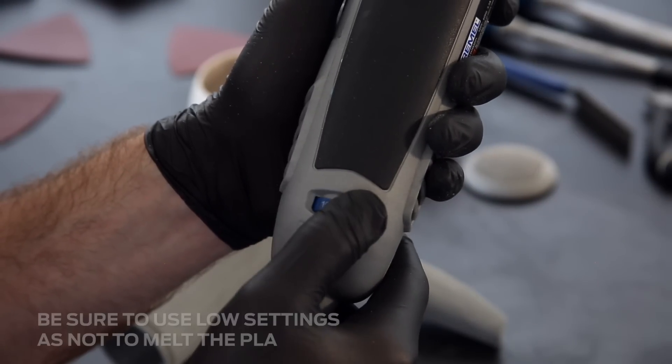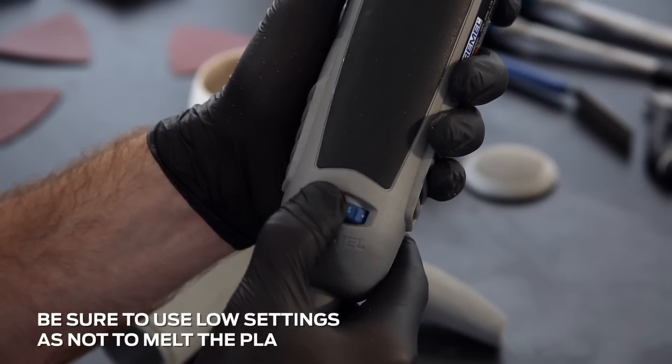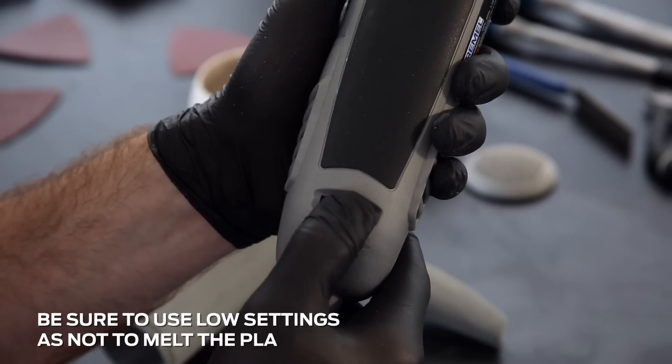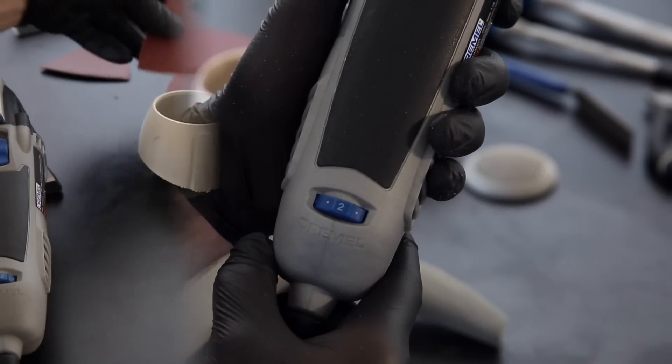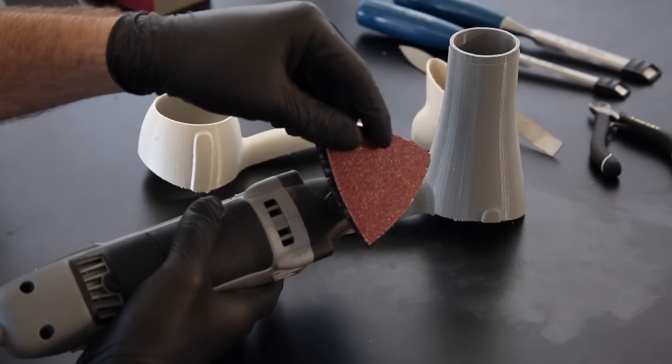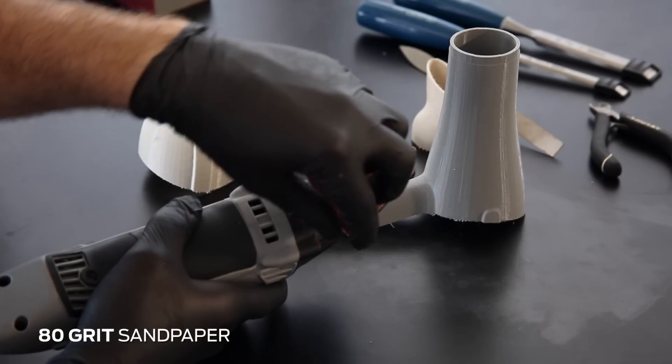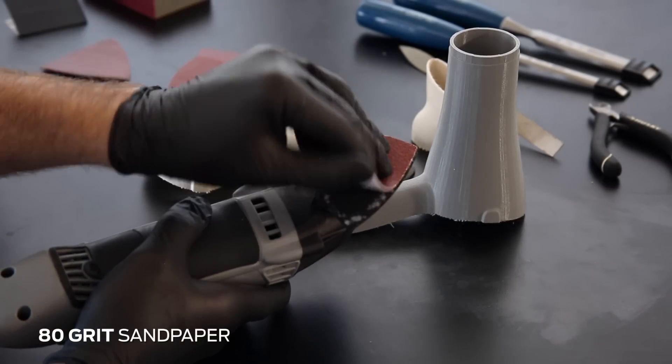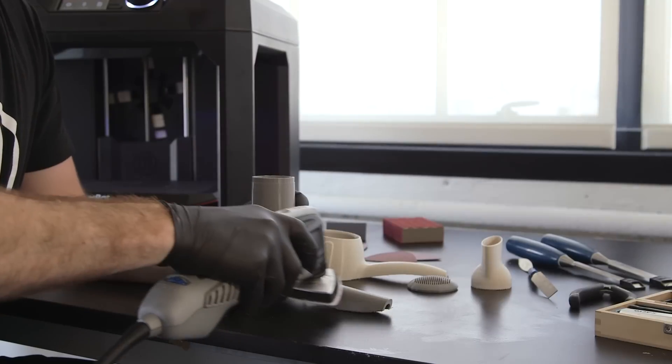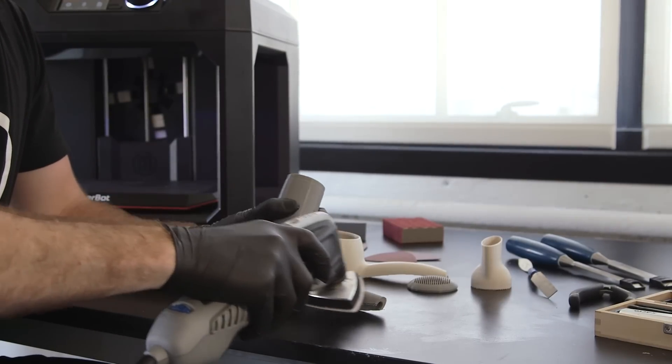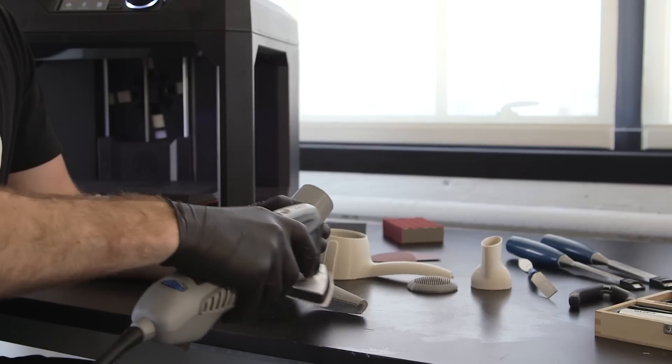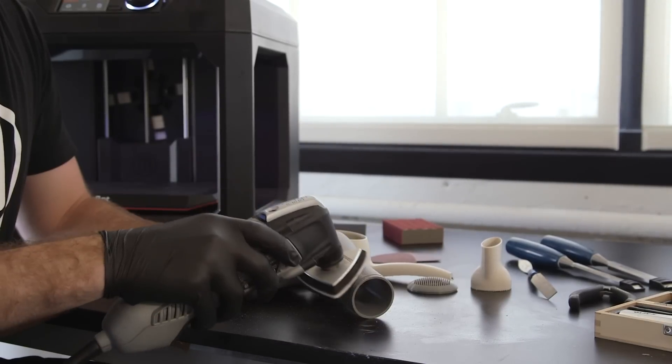Now that all support material has been removed, you can begin the sanding process. Sanding will produce small particles of filament, so wear a respiratory mask. Start with 80 grit sandpaper. When sanding with coarse sandpaper, you're creating the surface you'll later refine. This stage of sanding should remove the most material and create a fairly uniform surface.